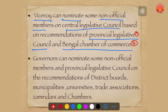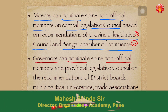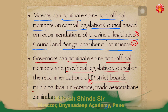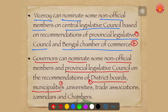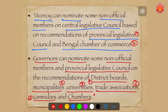Also, governors were given the right to nominate some non-official members to the Provincial Legislative Council on the recommendations of district boards, municipalities, universities, trade associations, zamindars, and chambers of various industries.